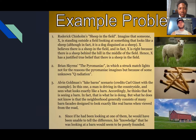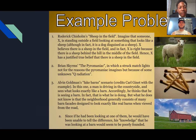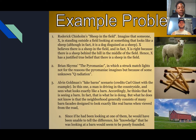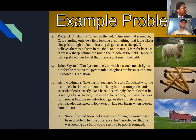There are better examples on the next slide. This one I use a lot because it's the easiest for me to understand: Roderick Chisholm's Sheep in the Field. Imagine that someone, X, is standing outside a field looking at something that looks like a sheep, although in fact it is a dog disguised as a sheep. X believes there is a sheep in the field, and in fact X is right — because behind everything he's looking at, there is a sheep hidden in the field. So he has a justified true belief that there's a sheep in the field, even though he's looking at a dog in a costume. The argument is he doesn't have any real knowledge because his belief is based off a poor justification. Another example is Brian Skyrms's Pyromaniac, in which a struck match lights not for the reasons we believe — like physics — but because of some unknown radiation.